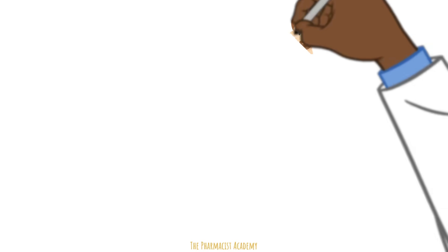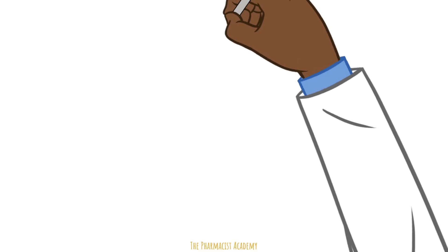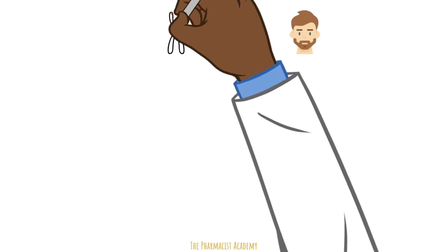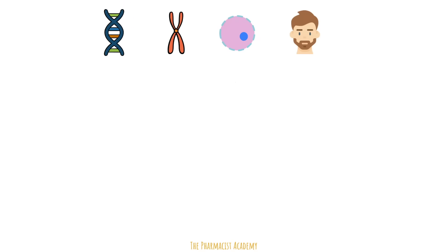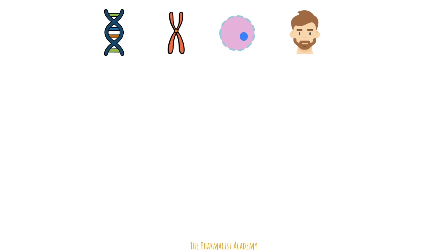DNA forms the building blocks to all mankind. So a person is actually made up of many cells, and these cells are all made up of chromosomes, and these chromosomes are made up of DNA, and this DNA contains our genetic information — our genes. These genes contain instructions for your body to follow and build things that are needed for the body to function properly.